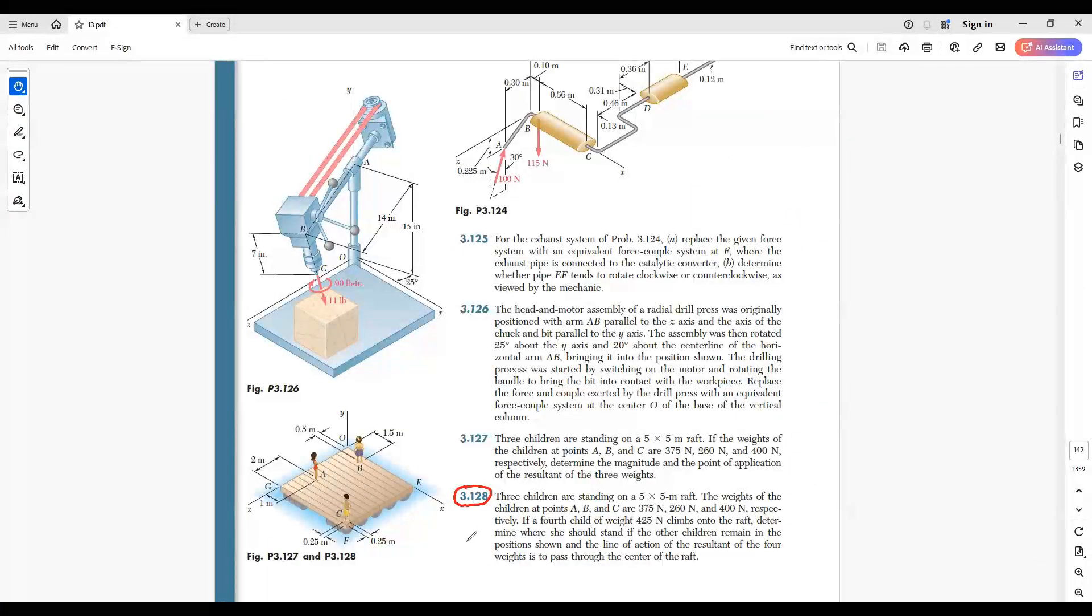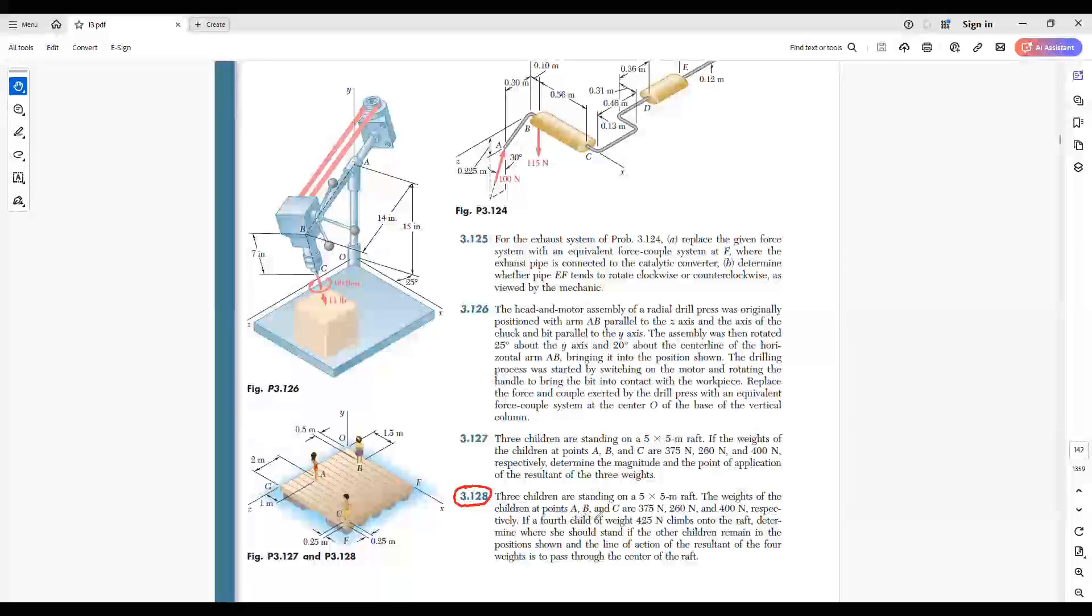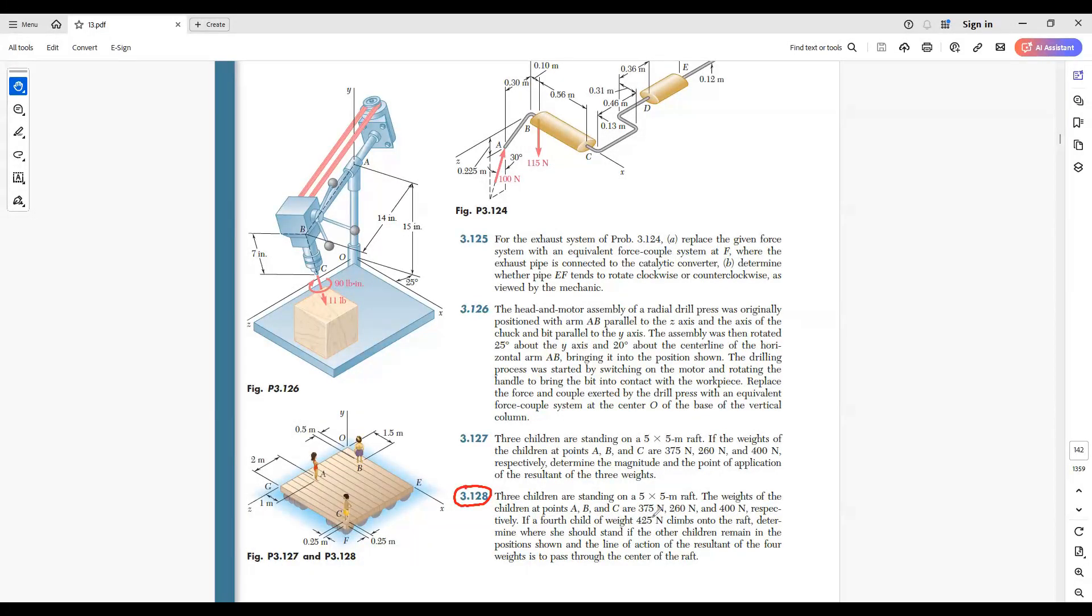Problem 3.128. Three children are standing on a 5x5 meter raft. The weights of the children at point A, B, C are 375 newton, 260 newton, and 400 newton respectively.